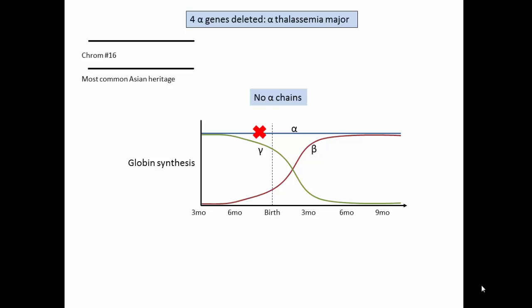In alpha thalassemia major, no alpha globin is produced. Early in gestation, gamma-4 tetramers, called hemoglobin Barts, accumulate in the fetal red cells. Virtually no oxygen is released to tissues and the fetus usually succumbs to death before or shortly after birth.